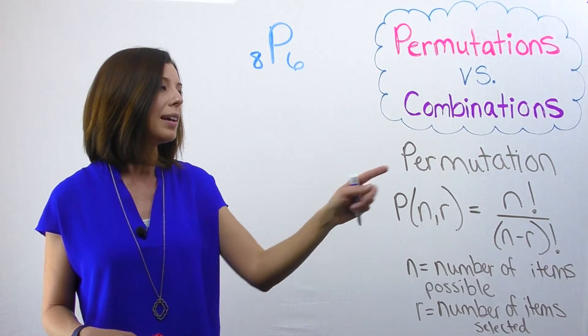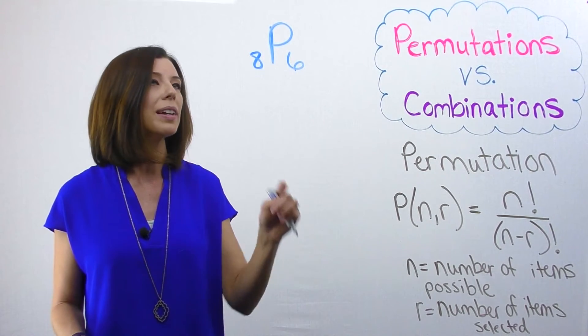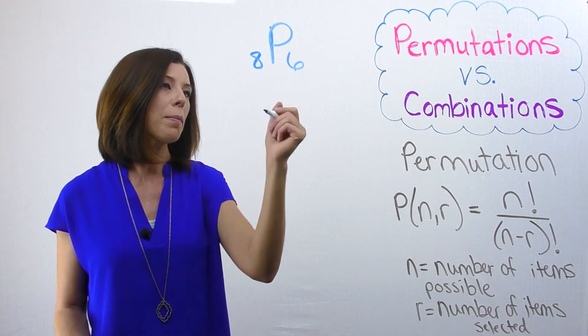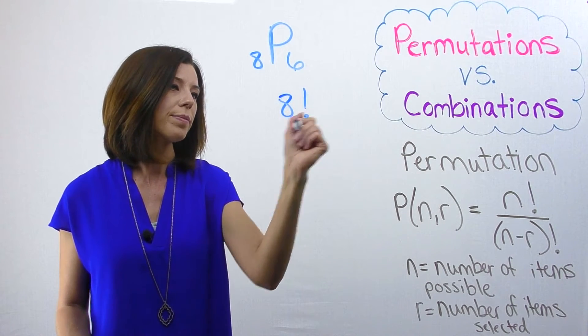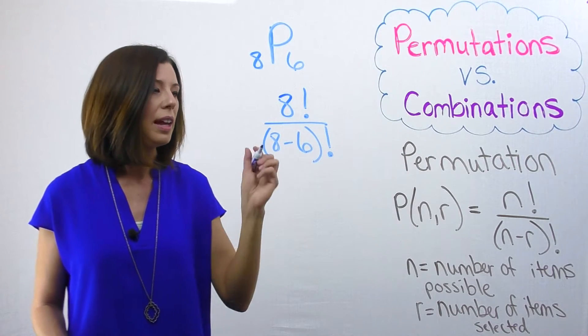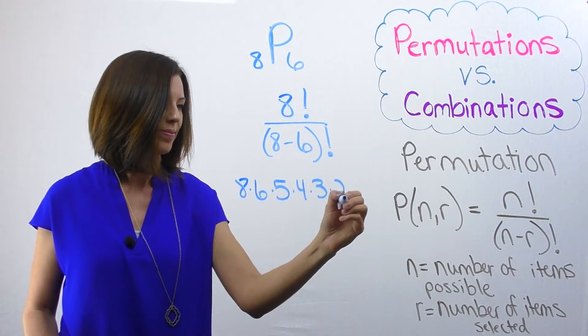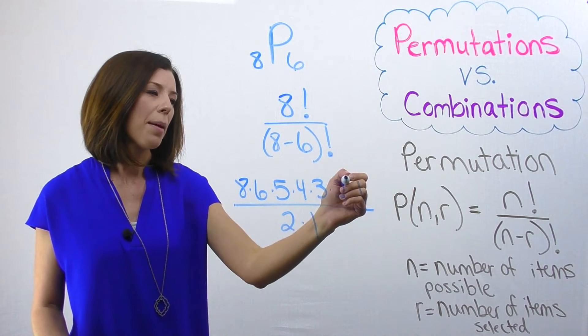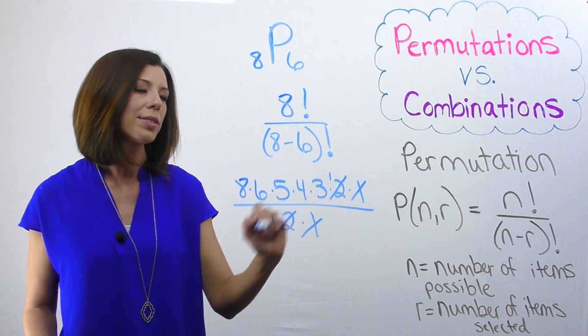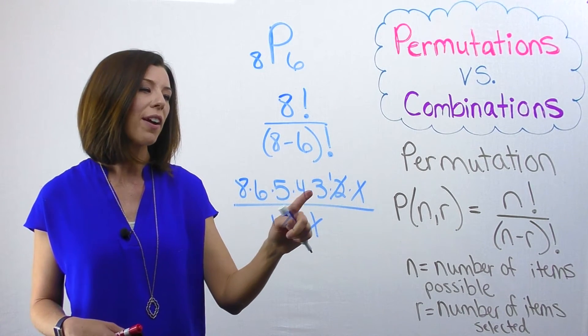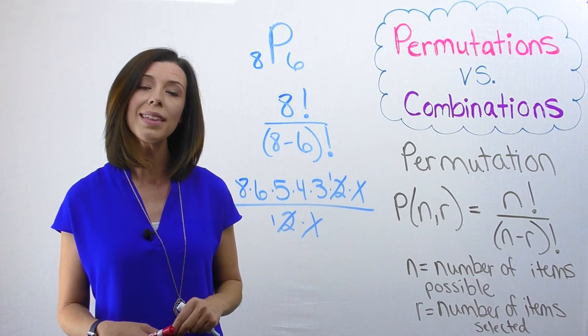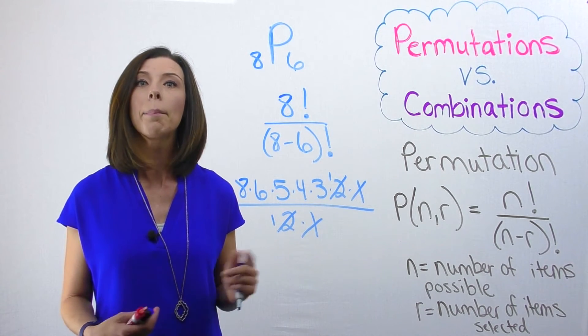Let's go ahead and plug our numbers into our formula. So again, I have eight total people. I want lineups of six. So now I'm going to do my eight factorial over the quantity of eight minus six factorial. And then let's go ahead and write this out as well. I can see that my two and two simplify to make ones, and then obviously my ones do the same. So I'm left with eight times six times five times four times three. When I solve this out, I get 20,160 possible lineups.